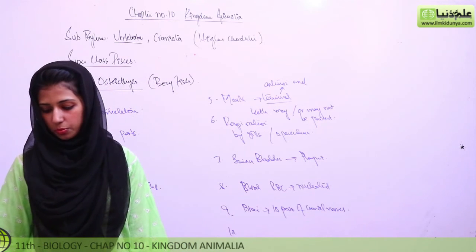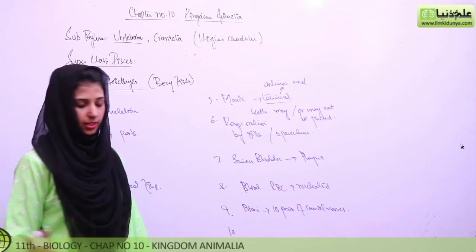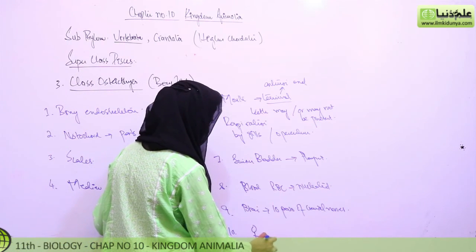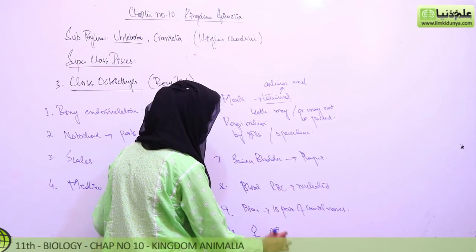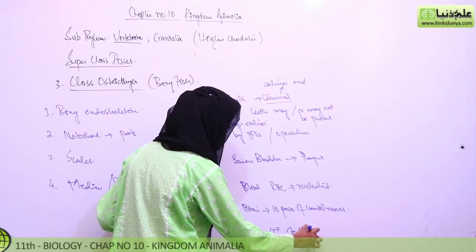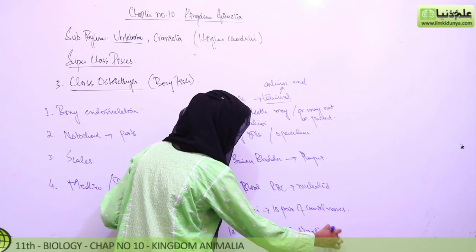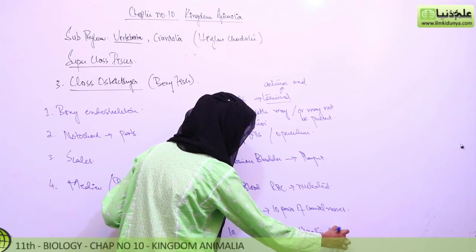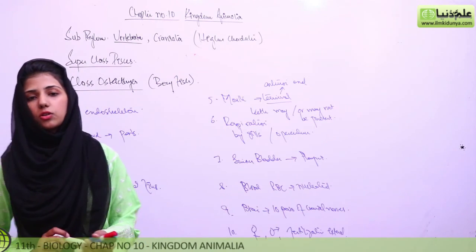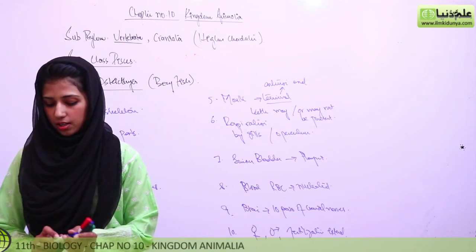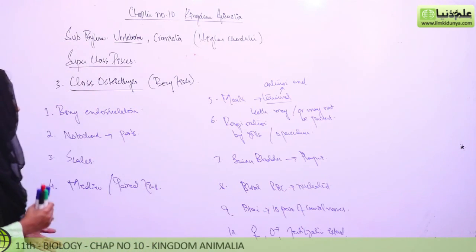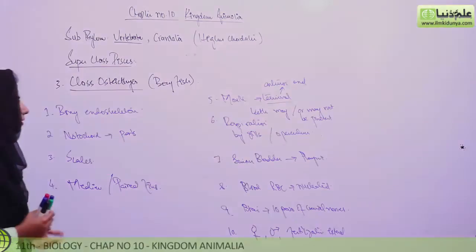Sexes are separate with paired gonads. Fertilization is usually external. As with all aquatic organisms, fertilization in bony fish is external. This completes all three classes that have been covered in this lecture.